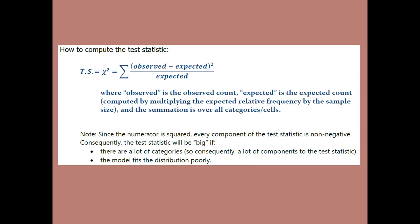There are a couple of ways for the test statistic to become big. It'll become big if there are a lot of categories, because every component of that sum will be non-negative — the numerator is squared and the expected count is positive. So if you have a lot of categories, you're going to get a big test statistic. The other way is if you have a few cells where the observed and expected counts are far apart, giving you big numerators. That would happen if the model fits the distribution poorly. We'd want to be able to differentiate between those two situations.